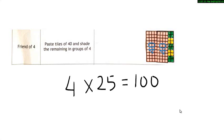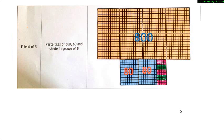What is the friend of 4? To find the friend of 8, tile 1000 using tiles of 800, 80, and shade the balance into groups of 8. Can you find the friend of 8? Now look at your lab observation sheet.